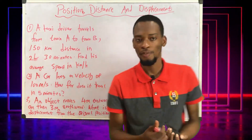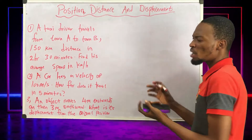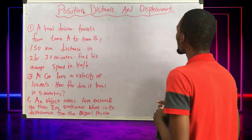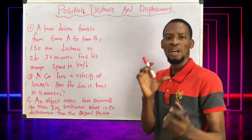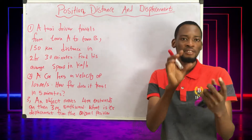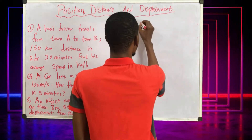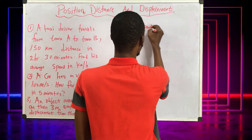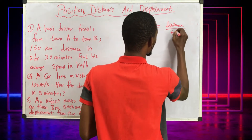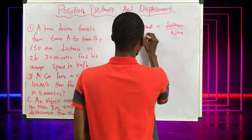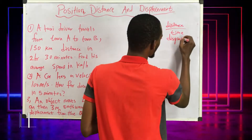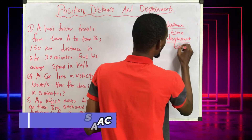Before solving these questions, note that distance is used to calculate speed while displacement is used to calculate velocity. Speed is equal to distance over time, while velocity equals displacement over time.